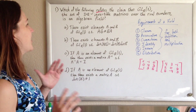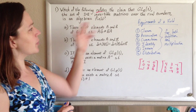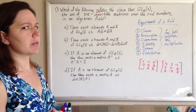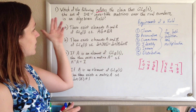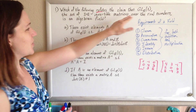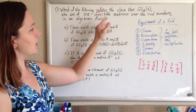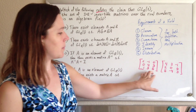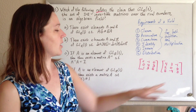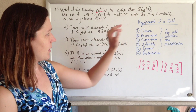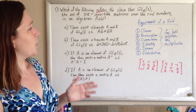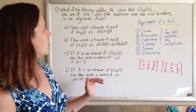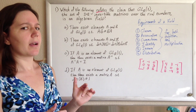Okay, here we go. First question: which of the following refutes the claim that GL3 is an algebraic field? They're going to tell me — GL3 is the set of 3x3 invertible matrices over the real numbers, like the set of all 3x3 matrices. So, which of the following refutes the claim that GL3, the set of all 3x3 invertible matrices over the real numbers, is an algebraic field?